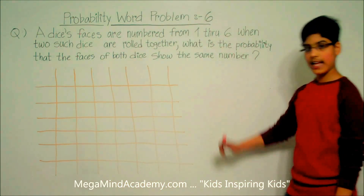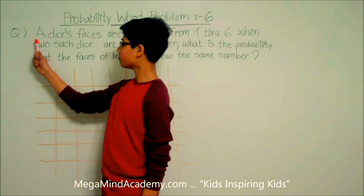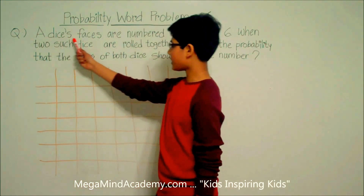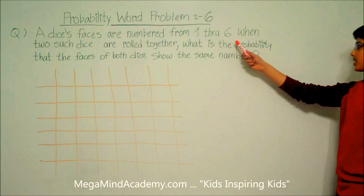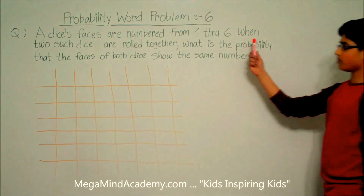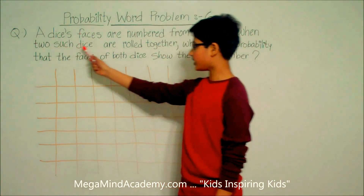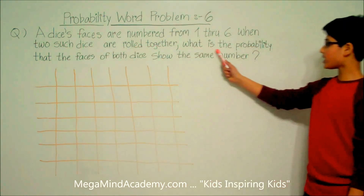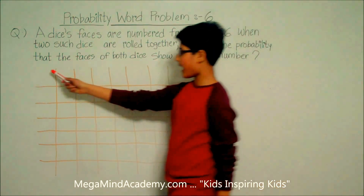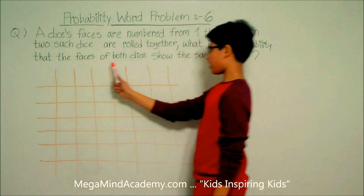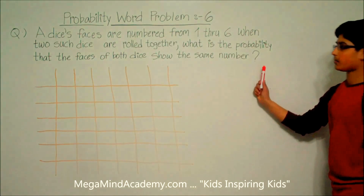Let's say we have a problem like a dice's faces are numbered from 1 through 6. When two such dice are rolled together, what is the probability that the faces of both dice show the same number?